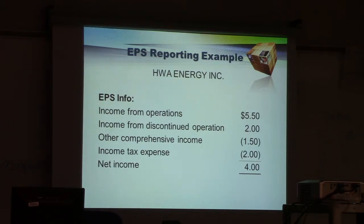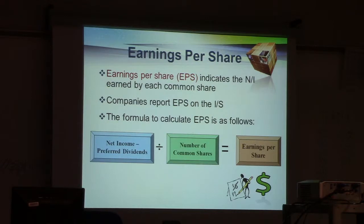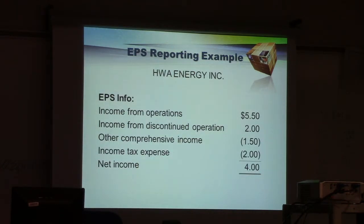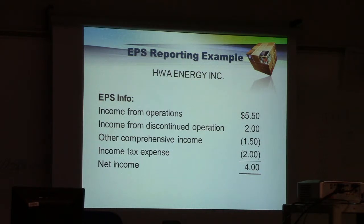Here is how EPS is usually shown. You have EPS info: income from operations gives $5.50 per share, income from discontinued operations gives $2.00, other comprehensive income is negative $1.50, and income tax expense is negative $2.00. So net income EPS at the very end is $4.00 — that is, $5.50 plus $2.00 minus $1.50 minus $2.00 equals $4.00. That's how the EPS info is shown on the income statement.